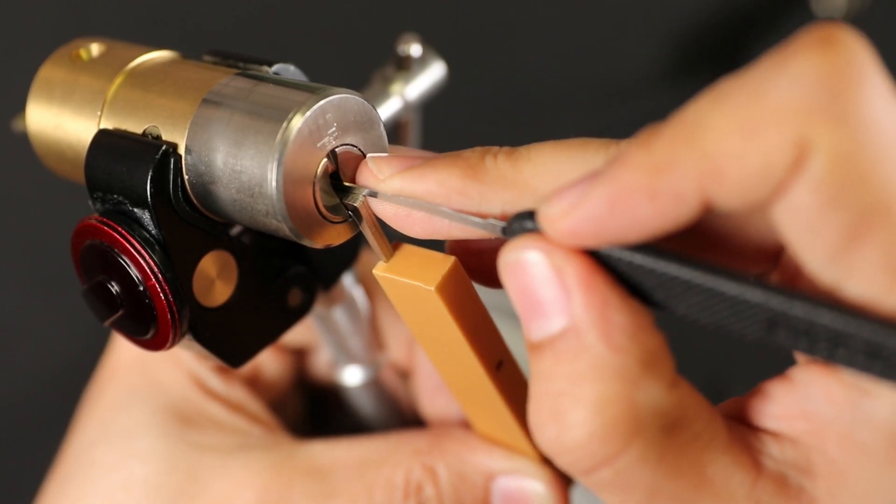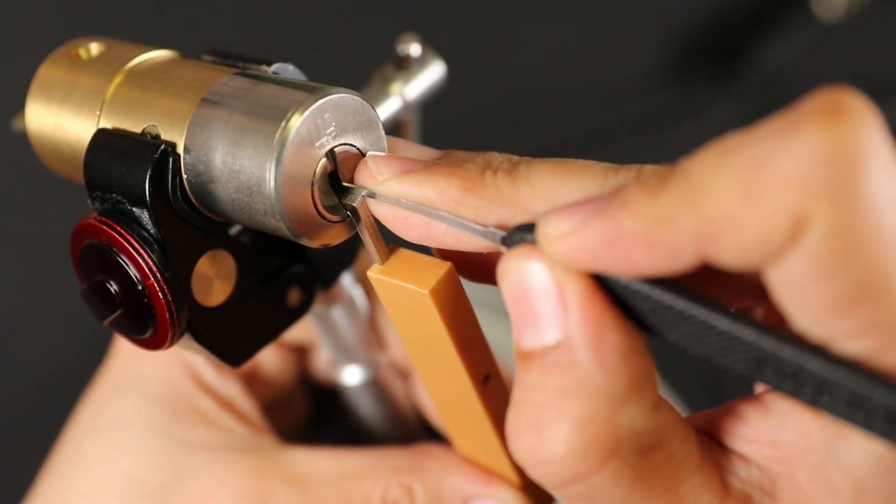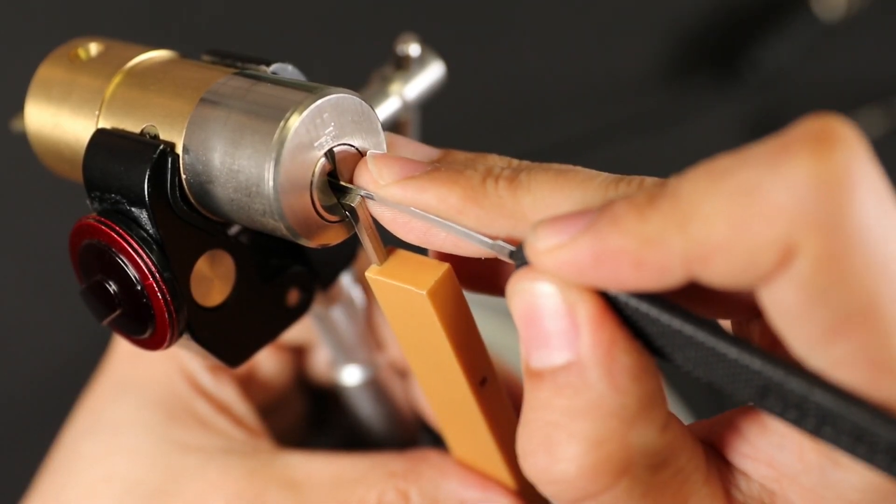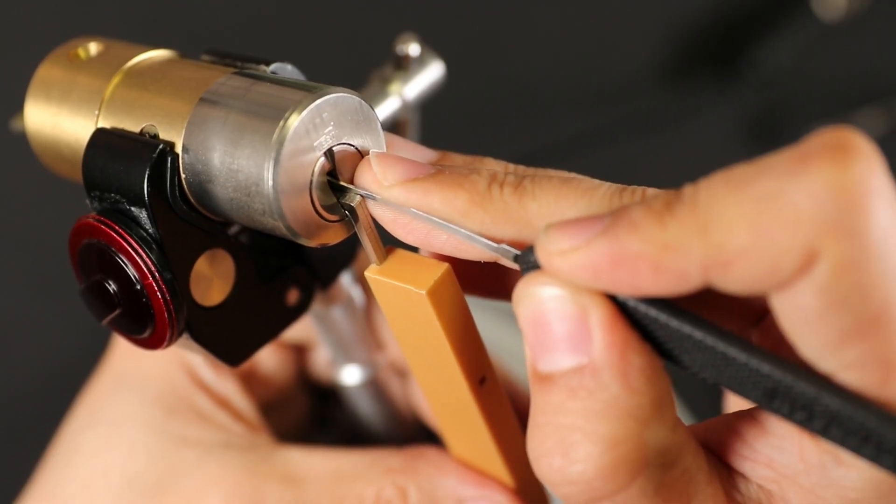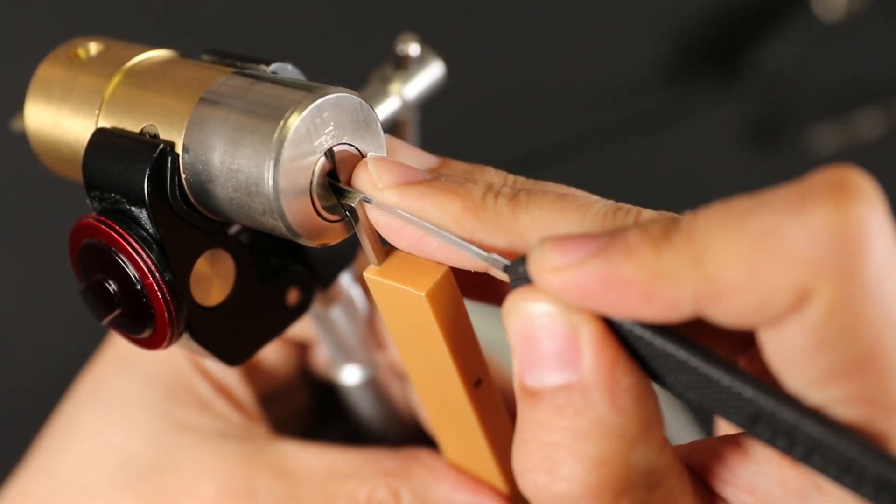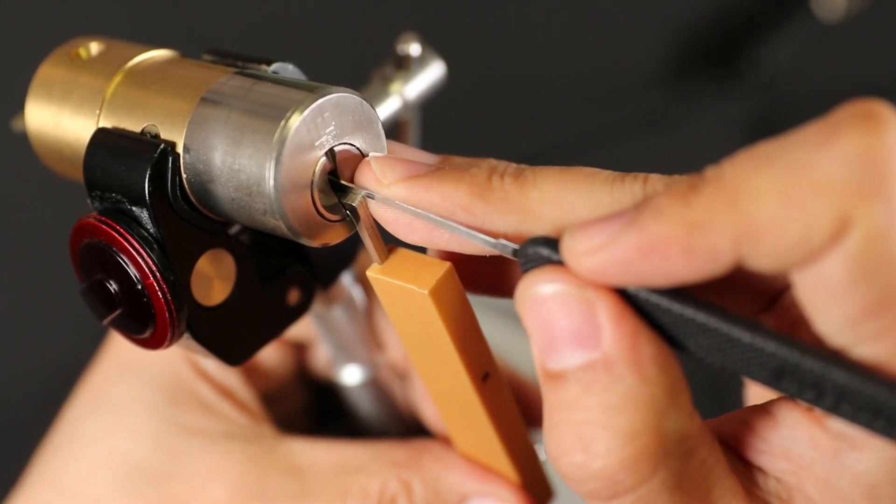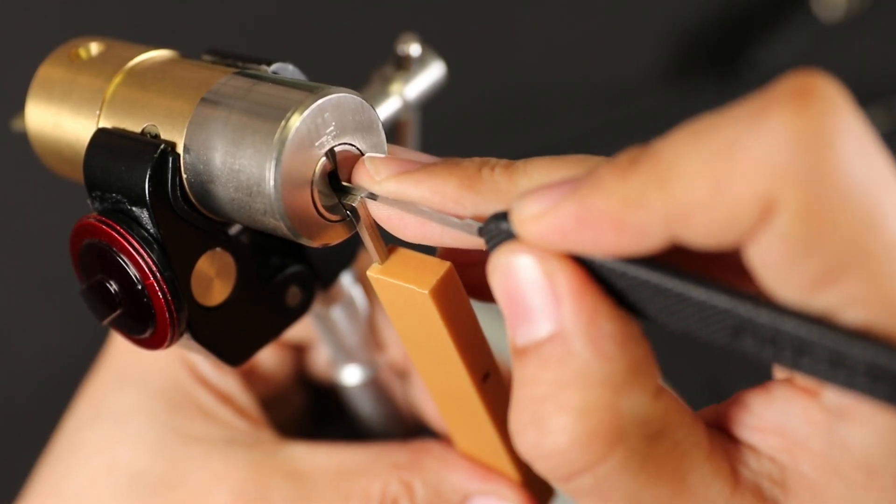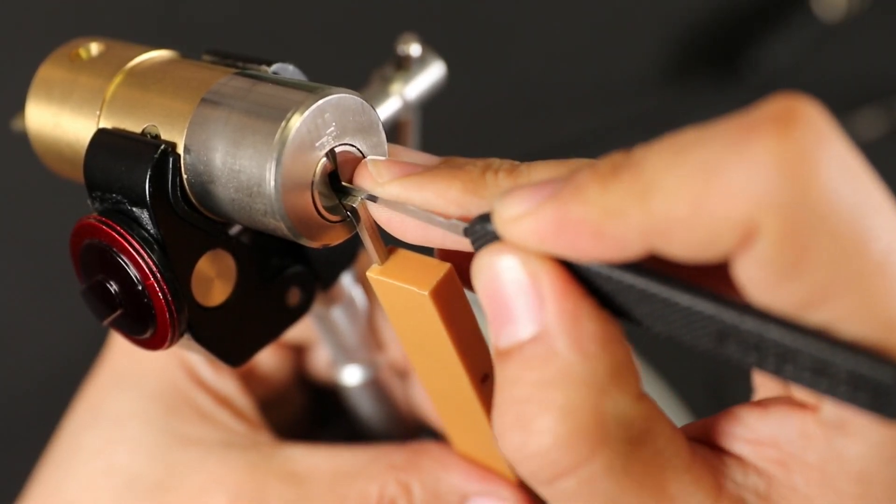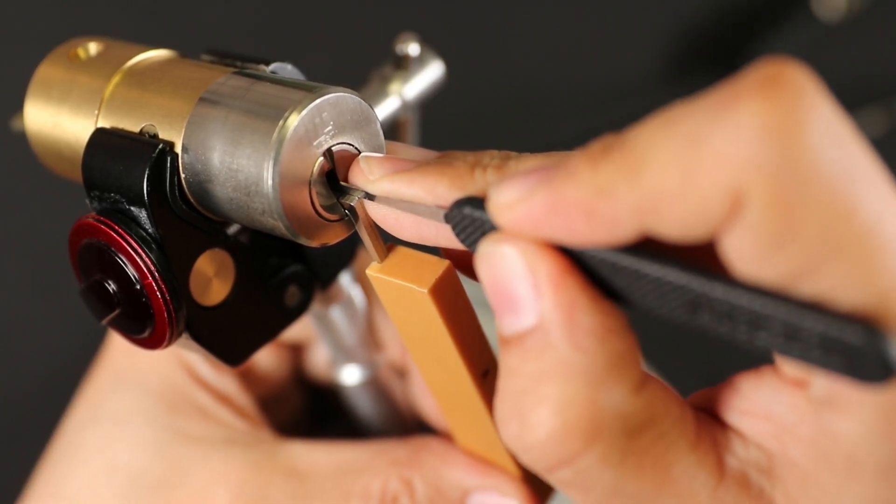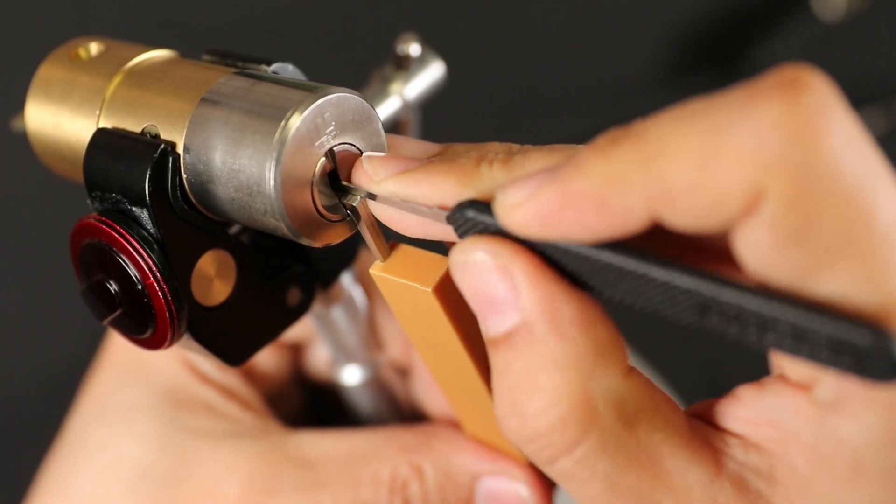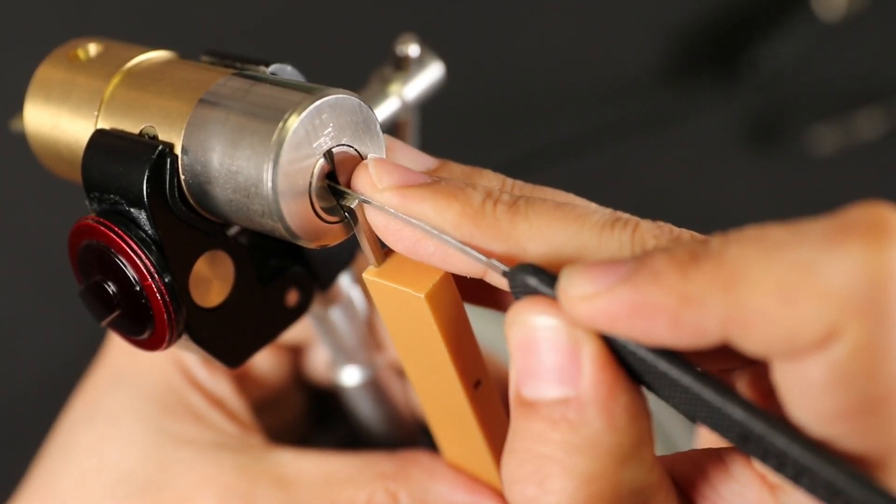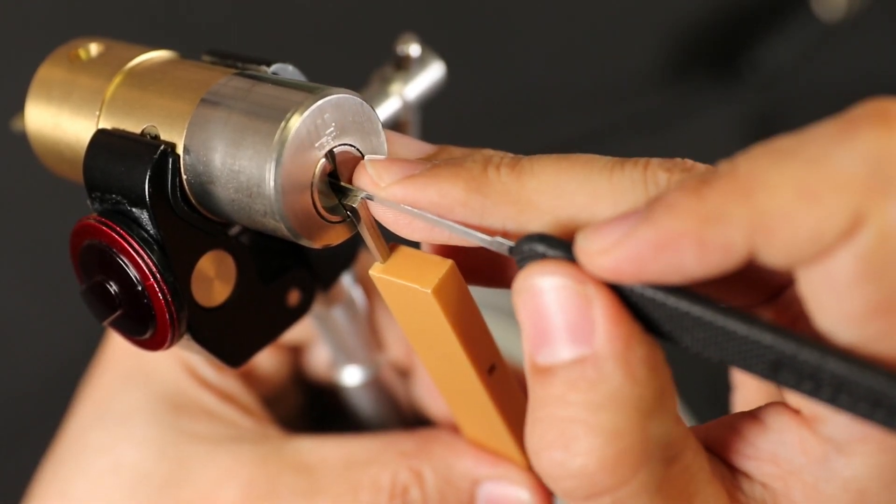Alright, so pin one, no, two. Getting a little counter rotation. Click. One's now counter rotating. Or it was. Hold on. I'll leave one alone, I'll come back to that. Three, no. Four, counter and click. Five, a little bit hard to get on, but click. Come back to one again. It's countering again. And a click. It was just really hard to lift that one high enough.